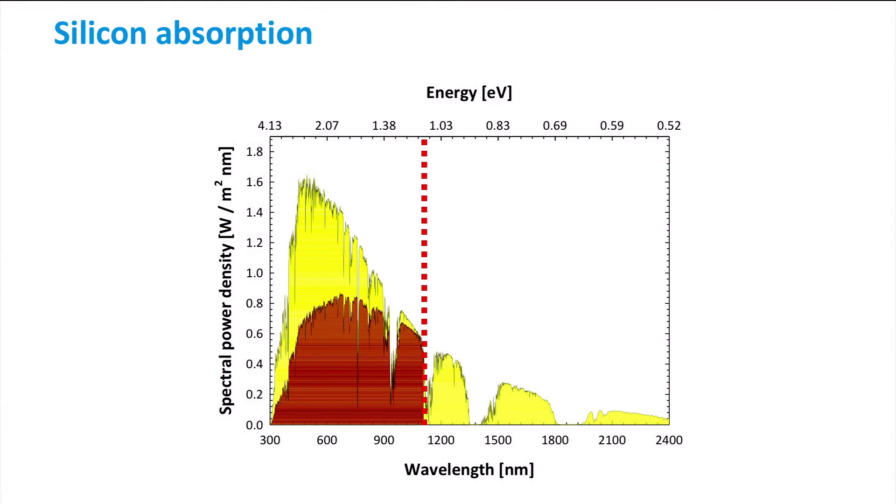Now let's see what this means when we want to know which part of the solar spectrum can be absorbed by crystalline silicon. In this figure, you can see the spectral power density of the AM1.5 spectrum in yellow. You can also see the fraction of the spectral power density that can be absorbed by silicon and converted into electricity in a solar cell.